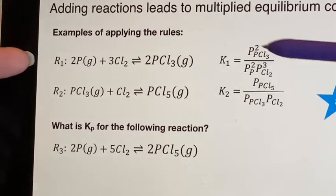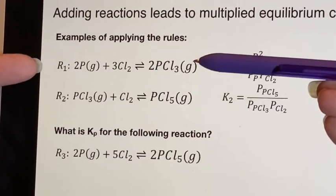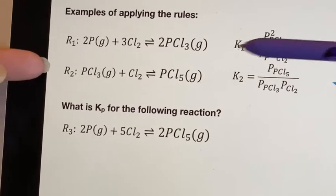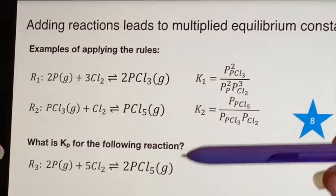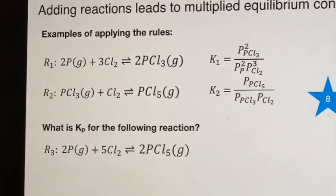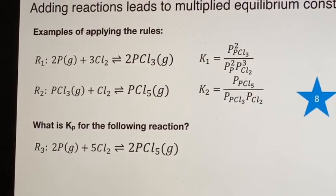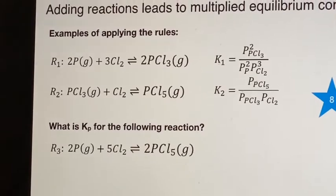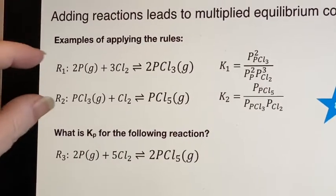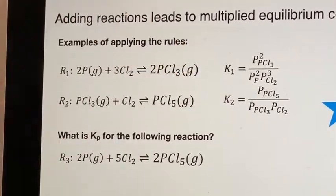So we have a K1 for the first reaction and we have a K2 for the second reaction. And we're being asked, what is K sub P for this reaction? I could do it one of two ways. I could just go ahead and say what it is from here, or I could do it by recognizing that I could combine these to make it.